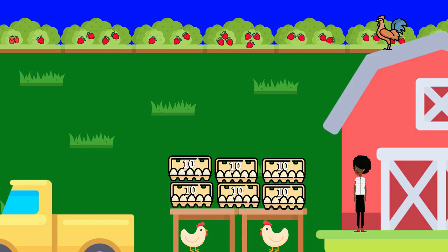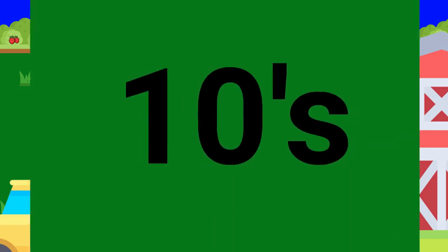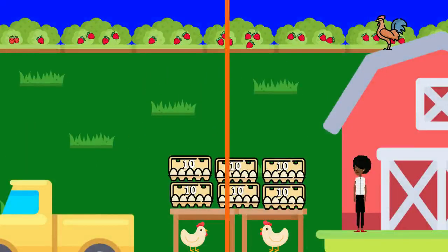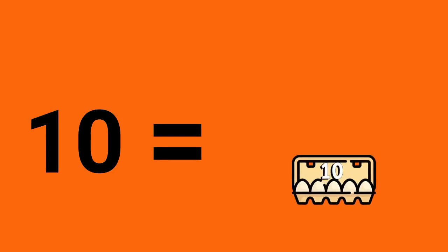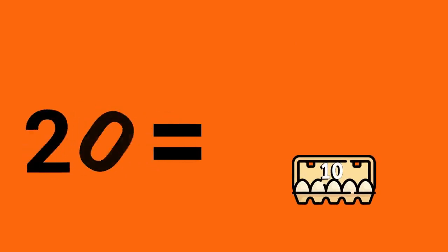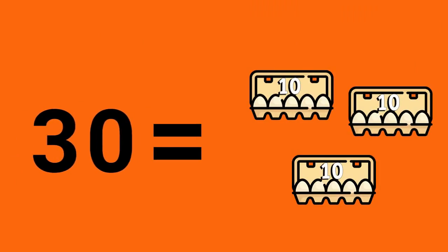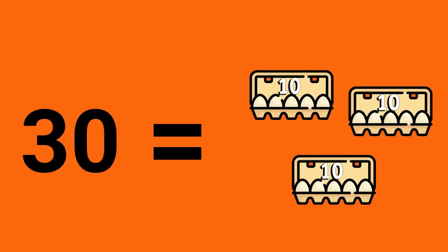Since each carton has 10 eggs, the digit in the tens place will increase. One carton has 10 eggs, so two cartons equals 20 eggs. Three cartons equals 30 eggs.